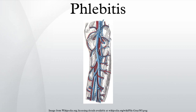Phlebitis is the inflammation of a vein, usually in the legs. It most commonly occurs in superficial veins. Phlebitis often occurs in conjunction with thrombosis and is then called thrombophlebitis, or superficial thrombophlebitis. Unlike deep vein thrombosis, the probability that superficial thrombophlebitis will cause a clot to break up and be transported in pieces to the lung is very low.